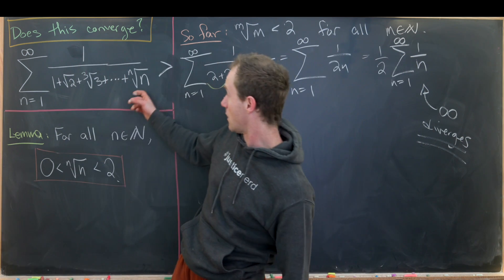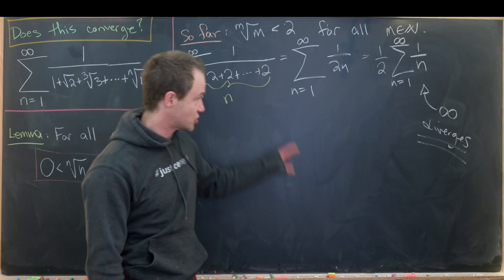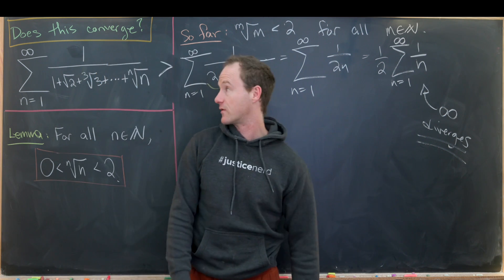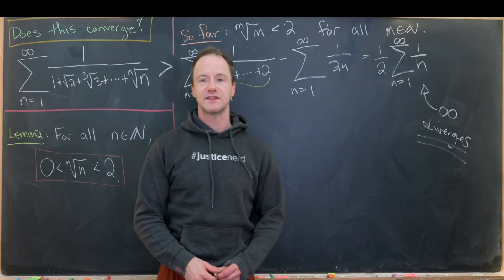But our kind of goal object over here is larger than this thing that diverges. So that means it must diverge as well. And that's a good place to stop.